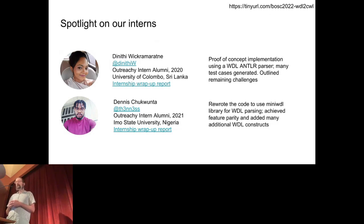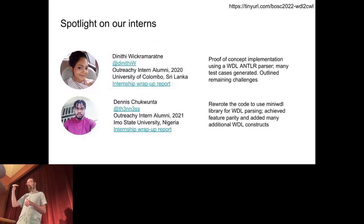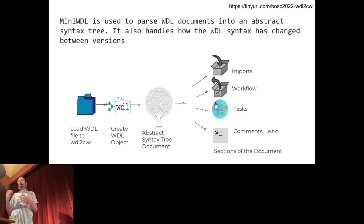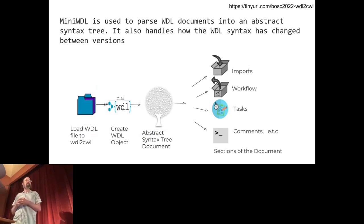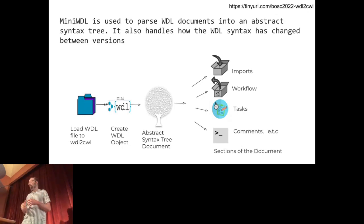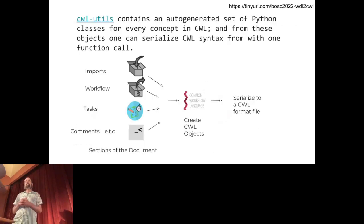Mini-WDL solved all those problems and helped us focus on doing the conversion. Dennis was able to achieve feature parity with where we were before and then extend it to many new constructs. We now use the mini-WDL parser — it gives us Python objects to represent all the pieces of the WDL file. We parse that and map it over using a similar library going the other direction, giving us CWL Python objects. Then we serialize and output the CWL.